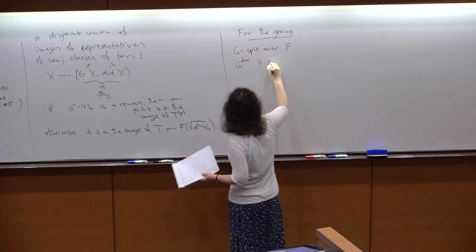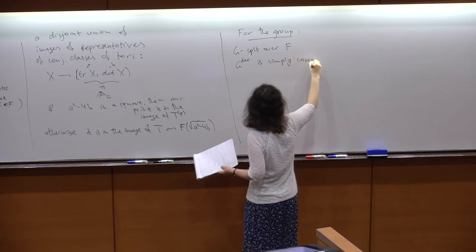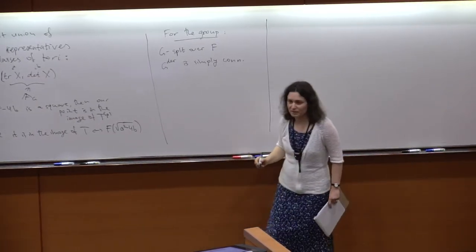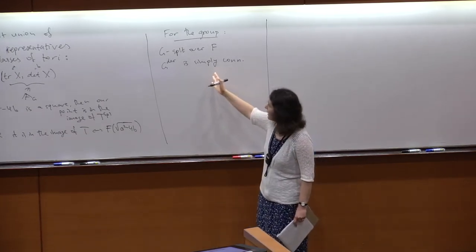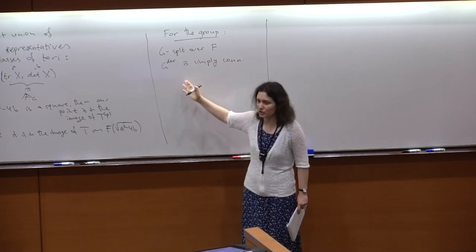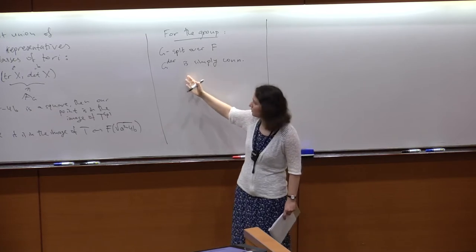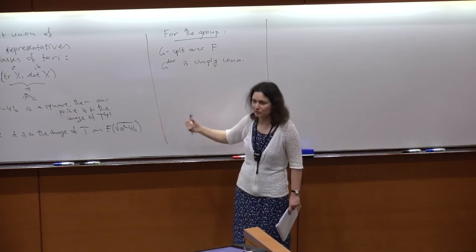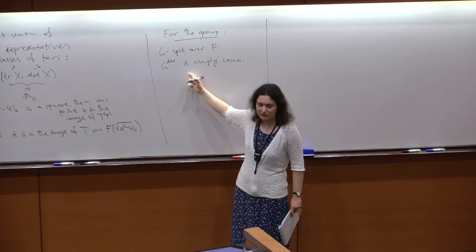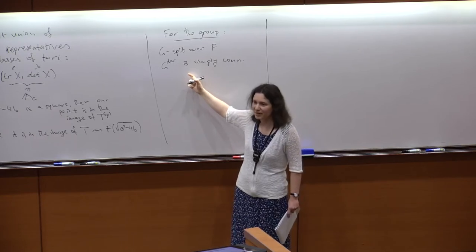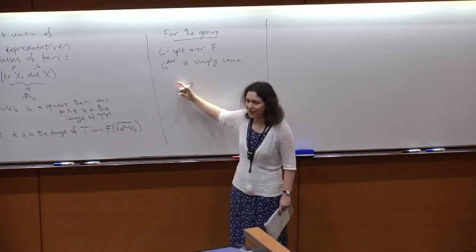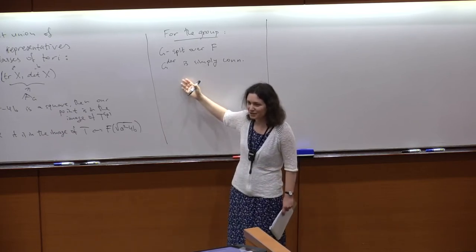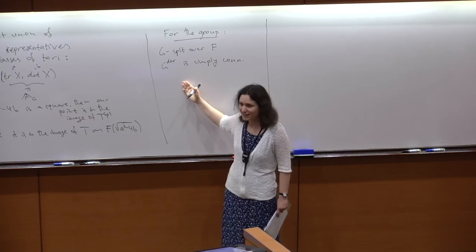I will also assume that the derived subgroup is simply connected. My understanding of what happens if it's not simply connected is quite shaky — many things change. The Steinberg-Hedging bases we're about to define will not be anything like an affine space, and as was pointed out yesterday, the matter of stable conjugacy versus G(F-bar) conjugacy is not simple in that case.